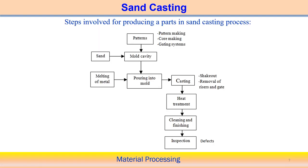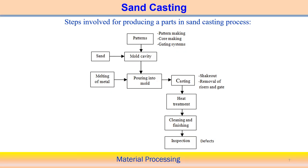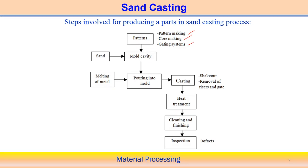The steps involved in producing parts by sand casting: first, we make the pattern, which is a replica of the component we want to produce. Pattern making includes core making and the gating system. The core creates the hollow section — a solid component is placed to create the hollow part in the cast component. Once the pattern is made, we create the mold cavity using it. The mold cavity is then filled with sand.